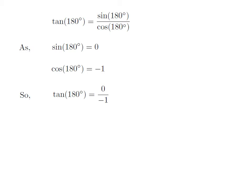Let's apply the above identities in the expression of tangent of 180 degrees. So, tangent of 180 degrees is equal to 0 divided by minus 1.